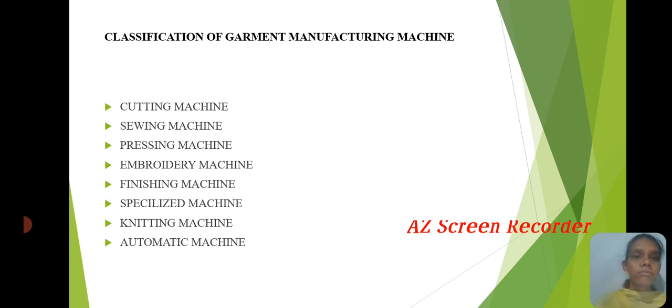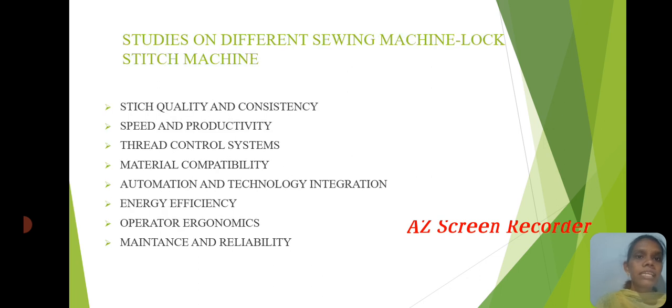The classification includes: Cutting Machine, Sewing Machine, Pressing Machine, Embroidery Machine, Finishing Machine, Specialized Machine, Knitting Machine, and Automatic Machine. We will also study different sewing machines.